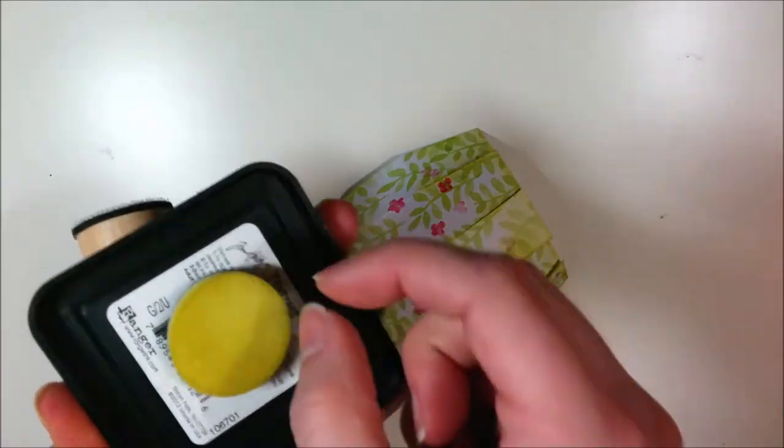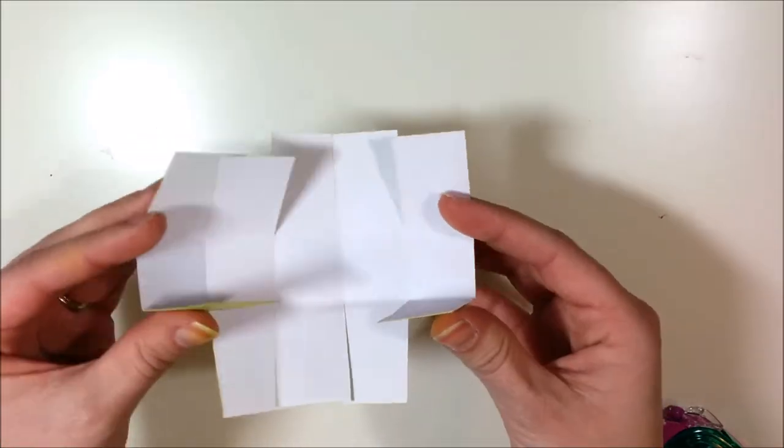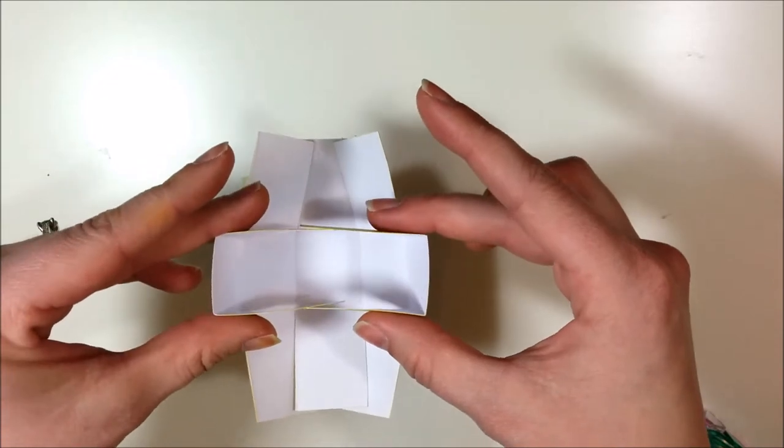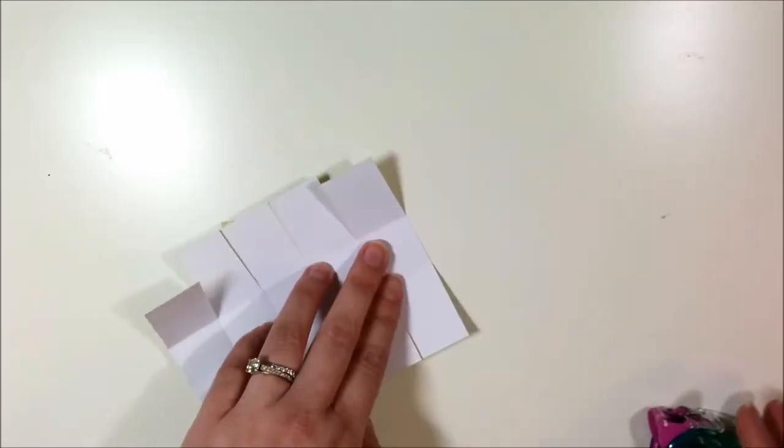I like to store my little foam pieces at the bottom of my ink pads. What I did was I just put a piece of Velcro, I glued a piece of Velcro on the bottom of every one of my ink pads. So they each have their own foam applicator.